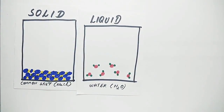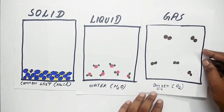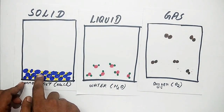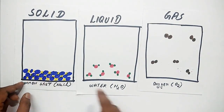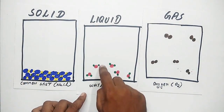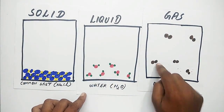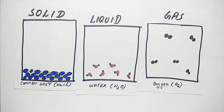How do we distribute atoms? Let's see. Solids are closely packed. Liquids have a little space between particles. Gases like oxygen also have a little space between particles.